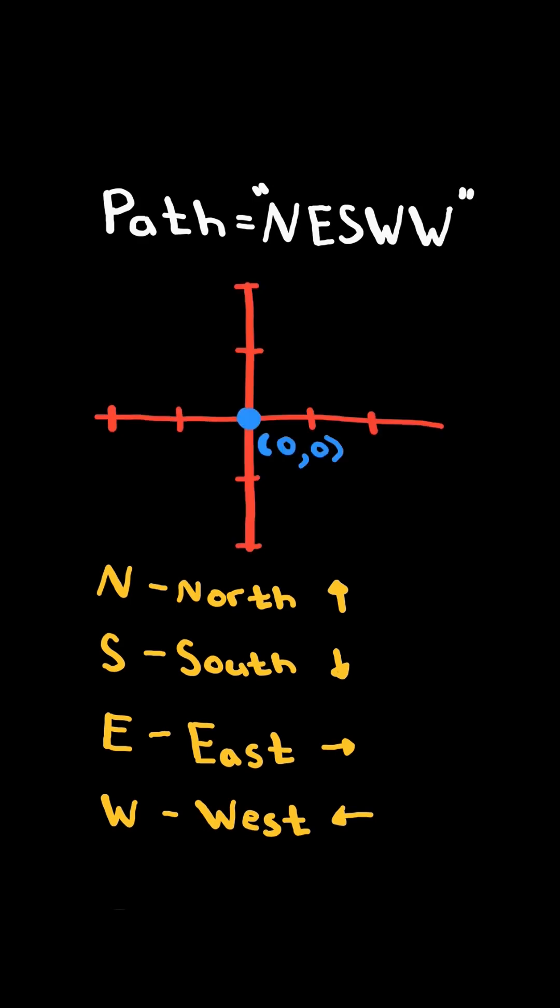Given a string path, we initially start at the origin, we move up 1 unit, move to the right 1 unit, down 1 unit, and to the left 2 units.